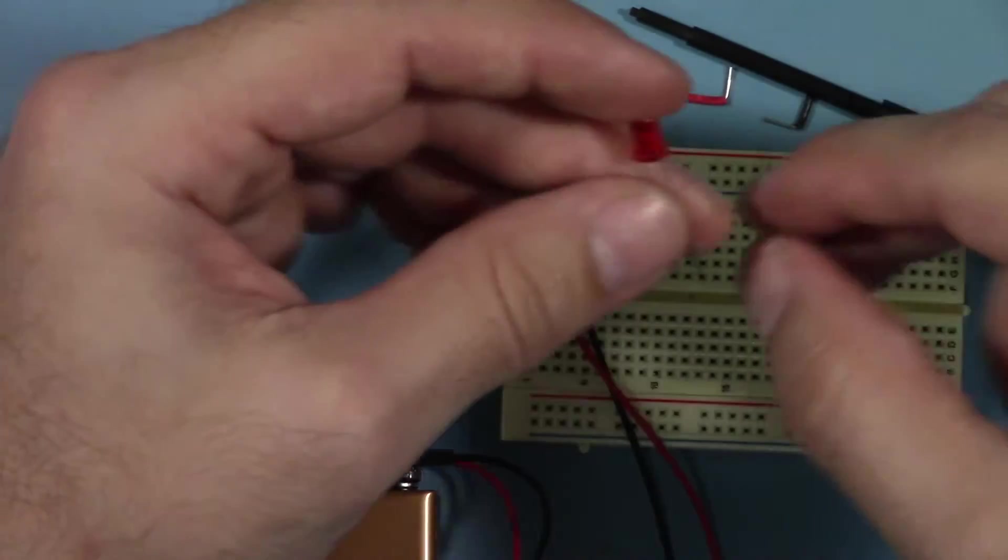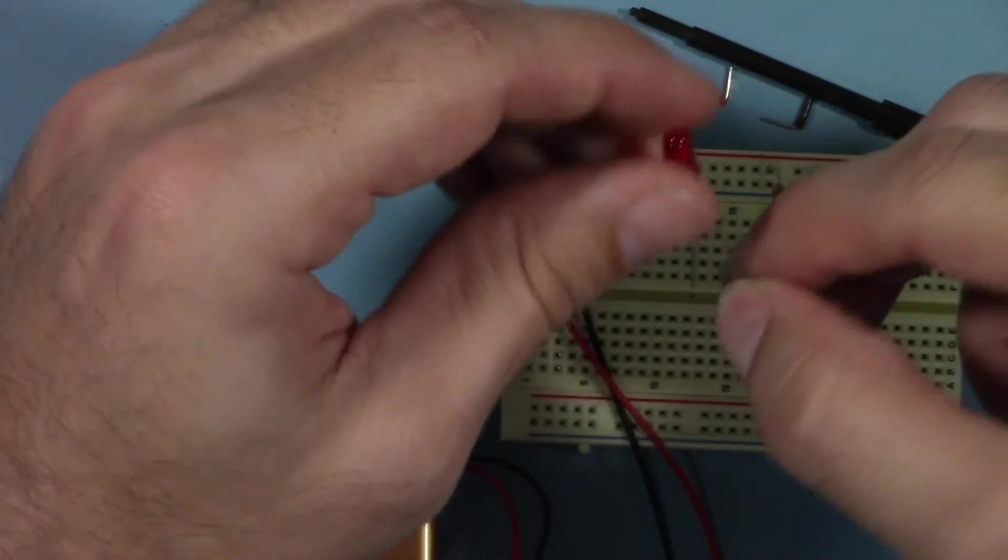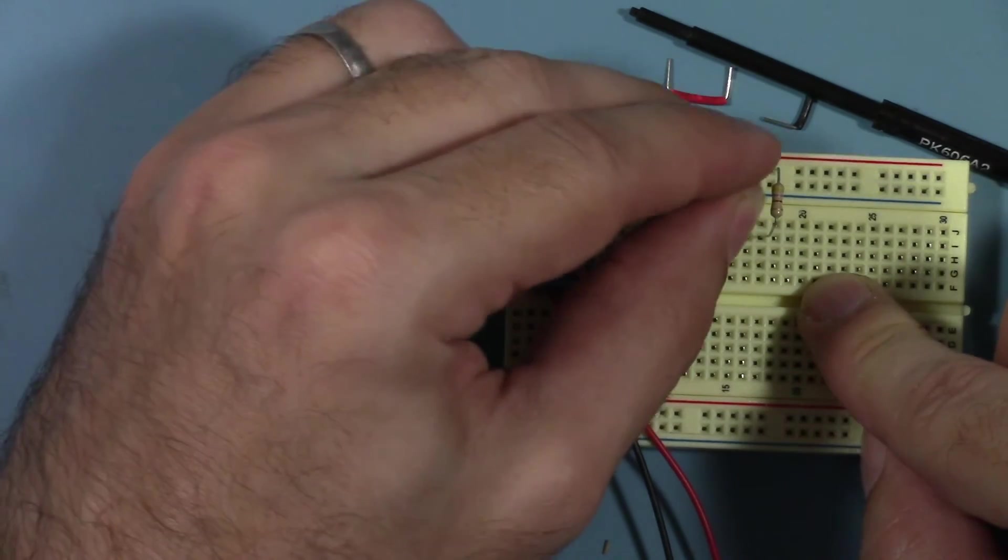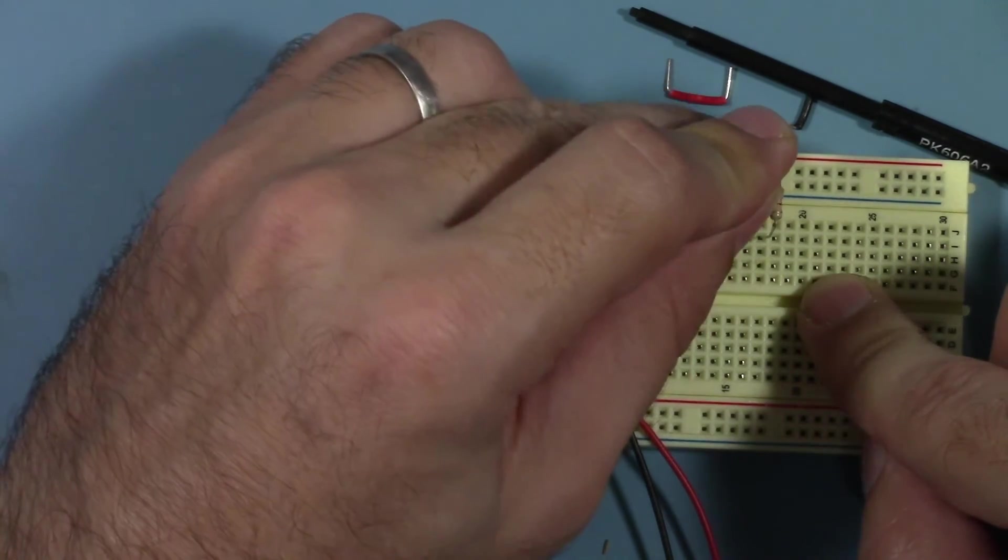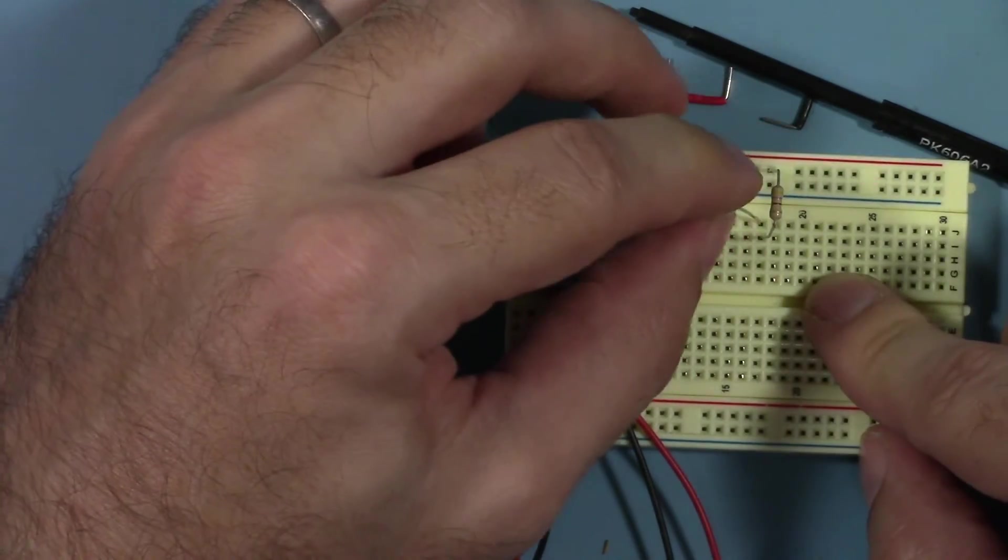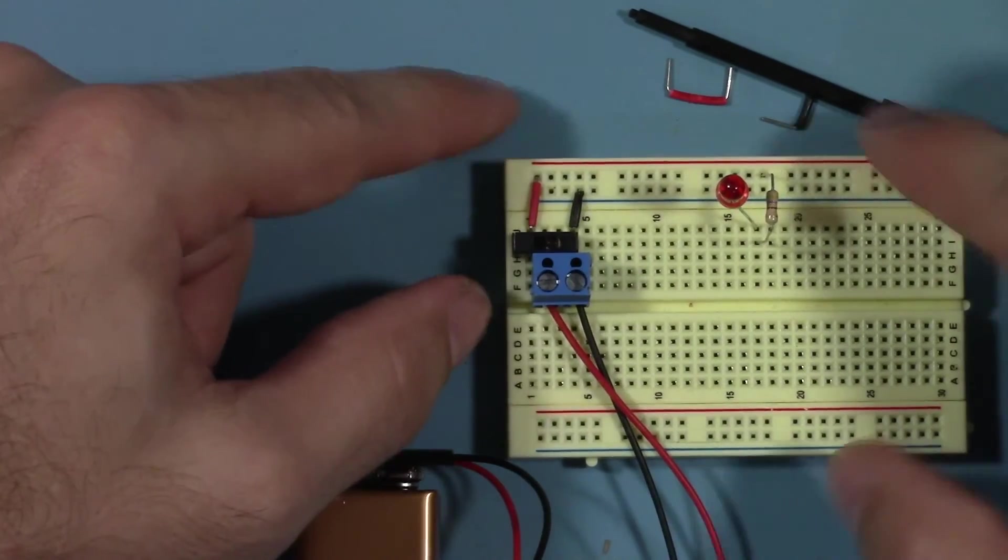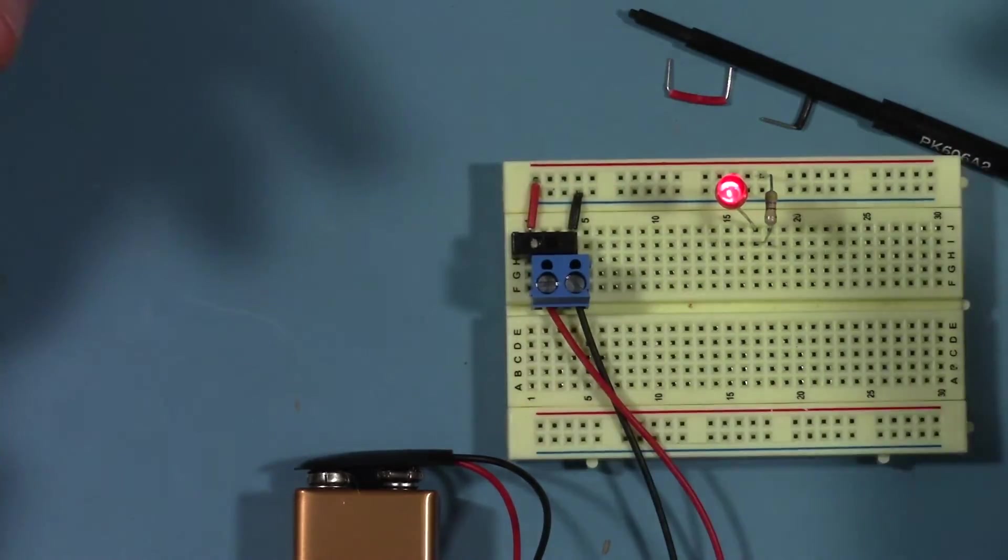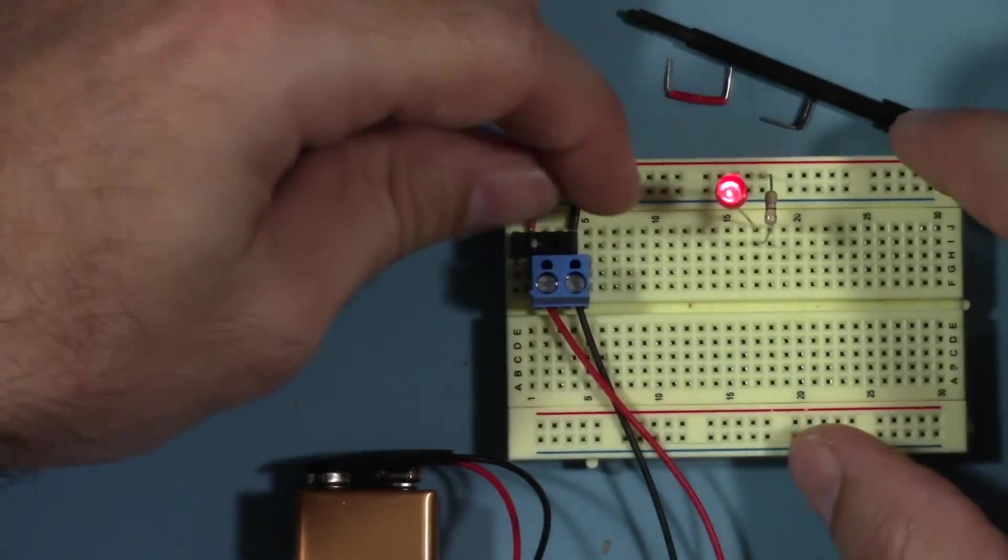Now because that's coming from the positive side, we've got to make sure and put the anode on that same row. So we'll put the anode on the same row, the cathode going to the negative terminal. So now we have no actual wires connecting our components. And now when we turn this on, it's still going to light up just as it did before.